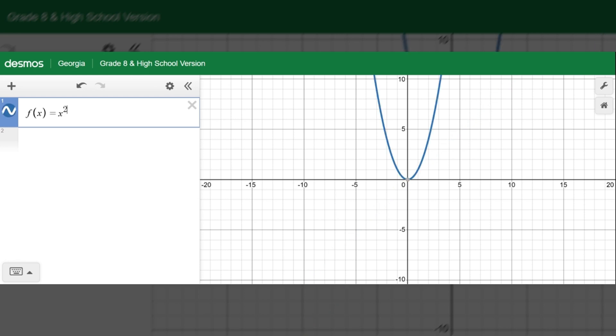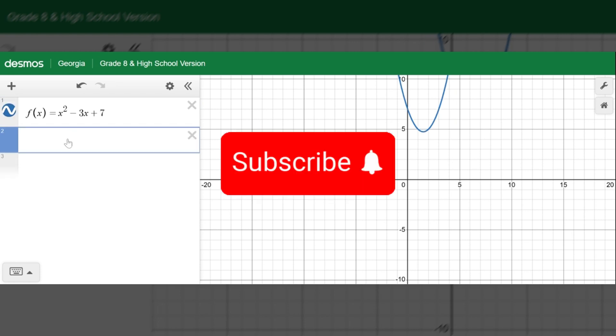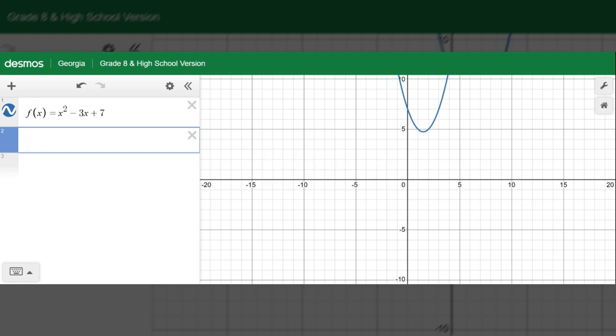Given a quadratic function f of x equals x squared minus 3x plus 7, and we have an interval of negative 2, comma 9.